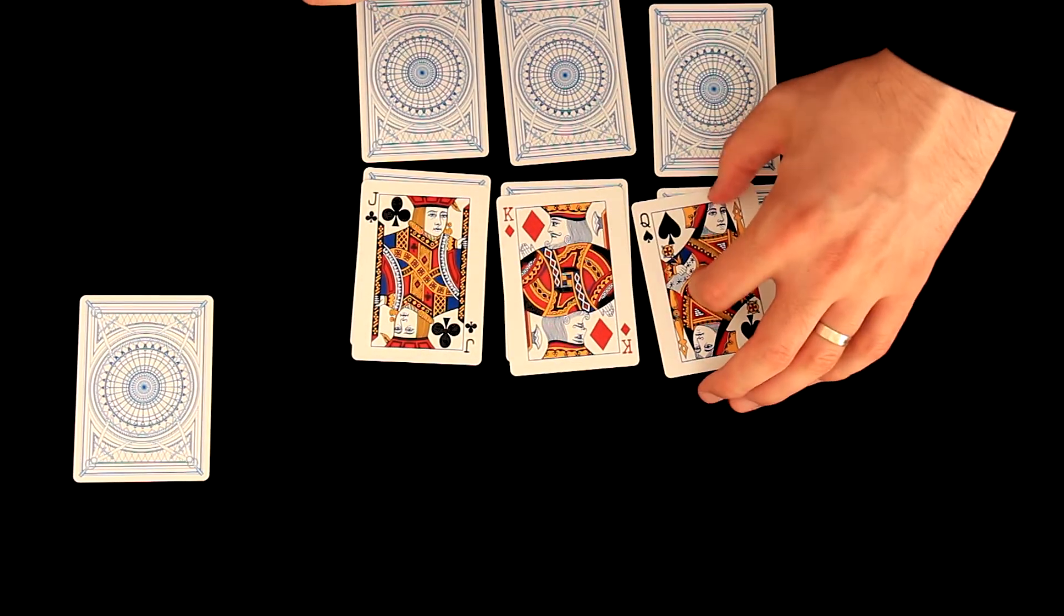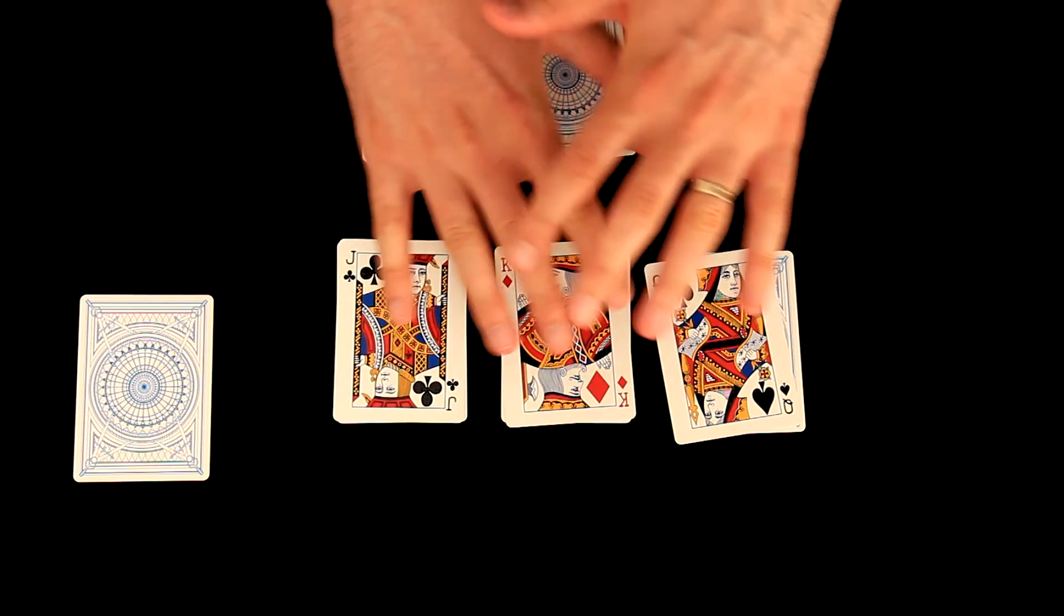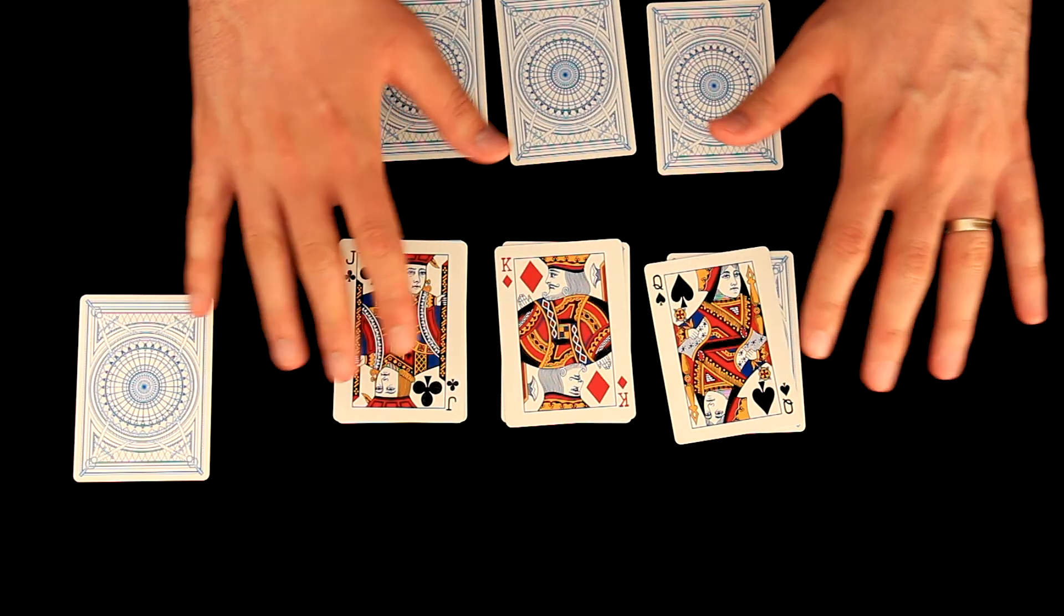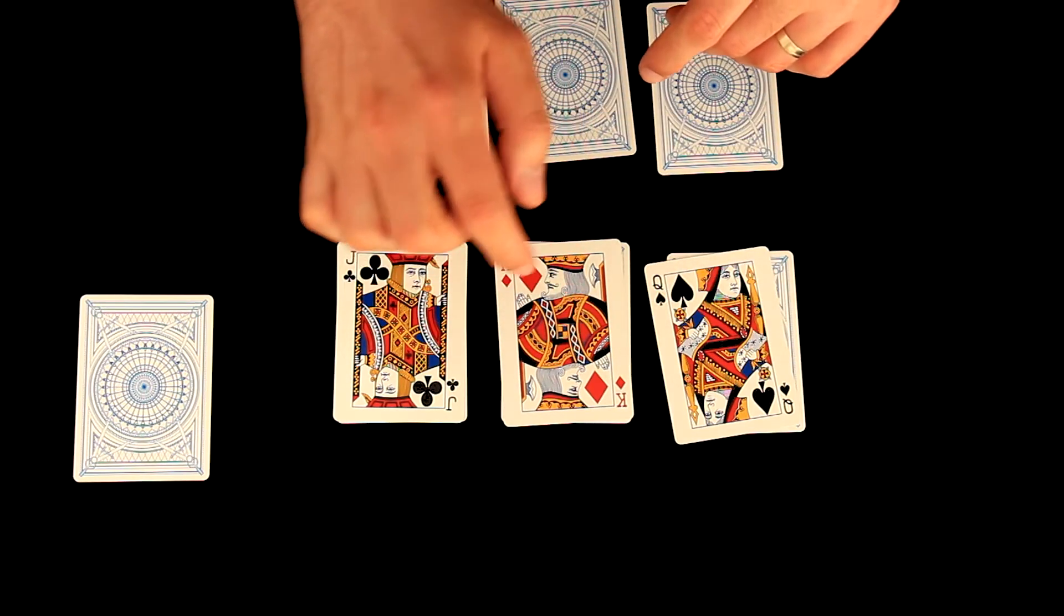So we have here three cards: spades, diamonds, and clubs. And I think you didn't choose diamonds.